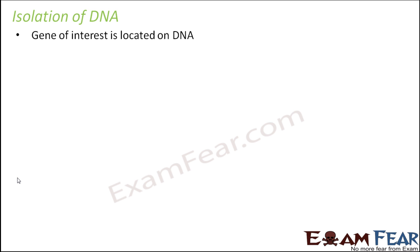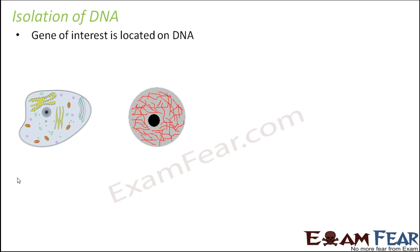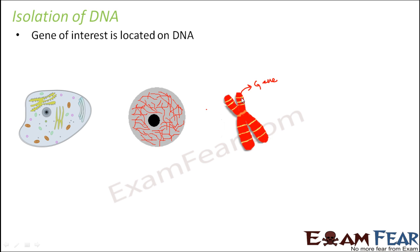Our main focus is on the gene of interest — that is our desired gene. This desired gene is located on a DNA, and DNA is present on the chromosome inside the nucleus of the cell of that organism. Every organism is made up of cells; inside the cell you have the nucleus, inside the nucleus you have the chromosomes, and on the chromosomes are located the genes. So our gene of interest is also located on these chromosomes.